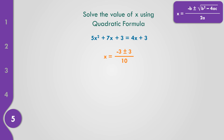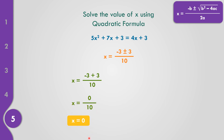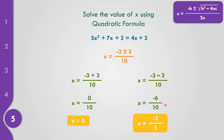Solving the two solutions: first, negative 3 plus 3 all over 10 equals 0 over 10, which equals 0. The second solution: negative 3 minus 3 all over 10. Negative 3 minus 3 equals negative 6, divided by 10. The lowest term of negative 6 over 10 is negative 3 over 5, because negative 6 divided by 2 is negative 3 and 10 divided by 2 is 5. So the solutions are 0 and negative 3 over 5.